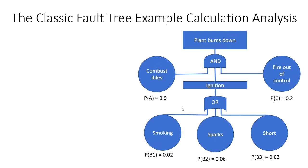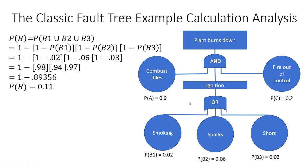The probabilistic formula for the OR gate: we want to find the probability of ignition. Since we are using OR logic — smoking, spark, or short circuit — we find the one event where none occur: no smoking (1 − 0.02), no spark (1 − 0.06), and no short circuit (1 − 0.03). Multiplying these gives the probability of no ignition, and subtracting from 1 gives the probability of ignition, which is 0.11.